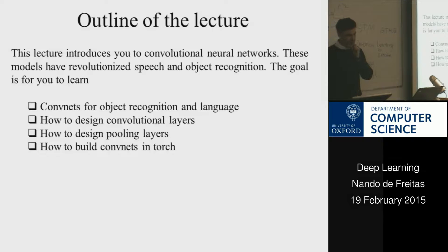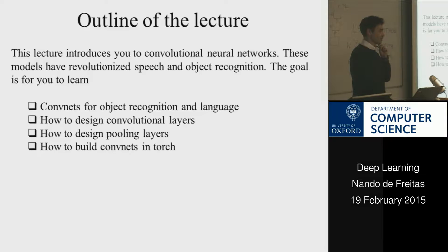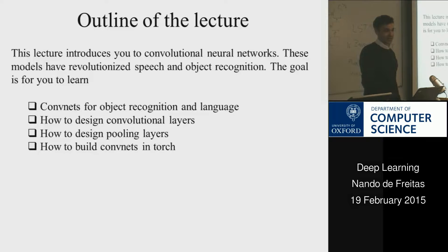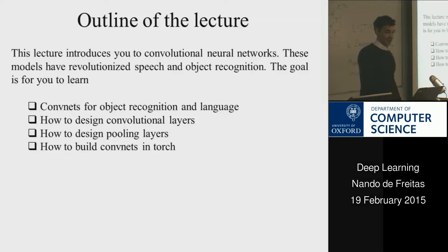But in this lecture, the focus will be on ConvNets. These models are probably the most popular — besides LSTMs — the most popular models in the world of deep learning. Because if you want to solve problems, and this is the reason companies are so interested in this, ConvNets allow you to do object recognition. Given any image on the web, you can figure out exactly who is in that image, what are they wearing, and what pose they're in.